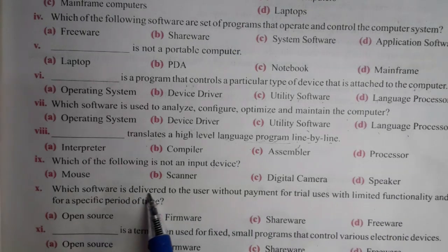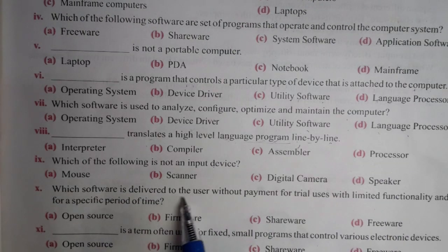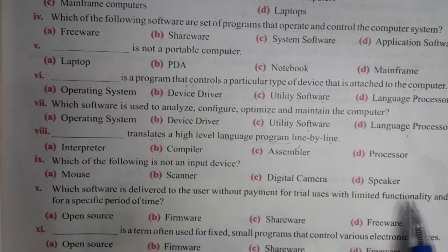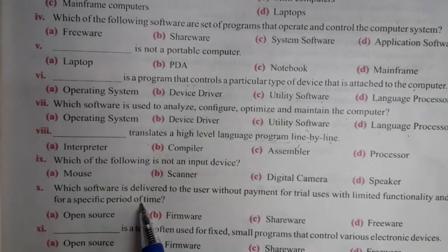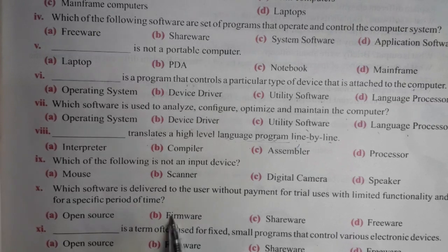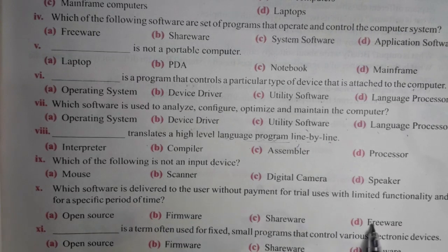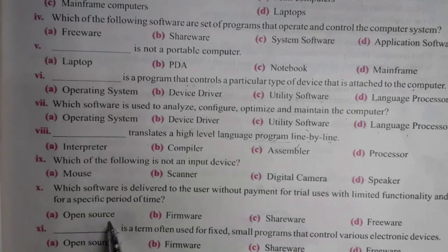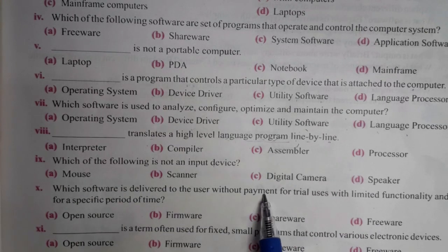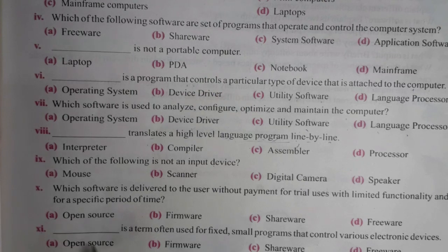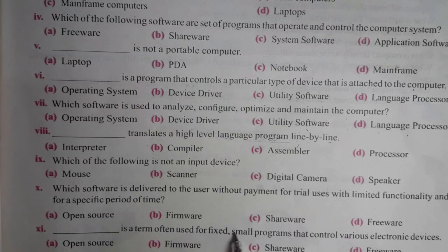Which software is delivered to the user without payment for trial use, with limited functionality and for a specific period of time? Options: open source, firmware, shareware, freeware. The correct answer is shareware — it is delivered freely and for trial use.